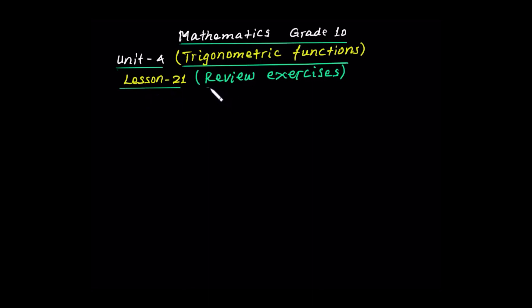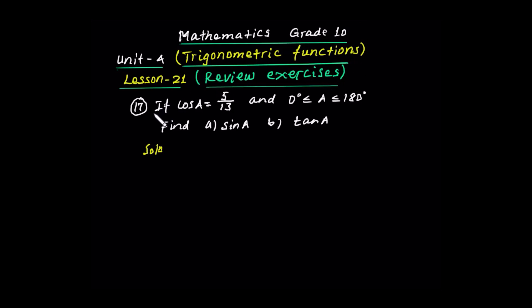The lessons will continue with the review exercises. For the first lesson: if cosine of angle a is equal to 5 over 13, and 0 degrees is less than or equal to a and less than or equal to 180 degrees, find the values of sine a and tan a.